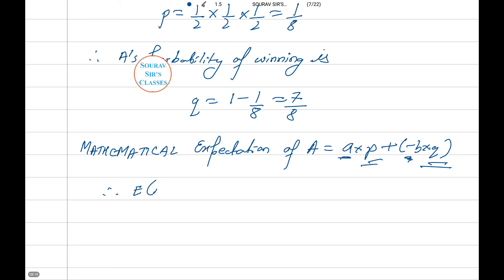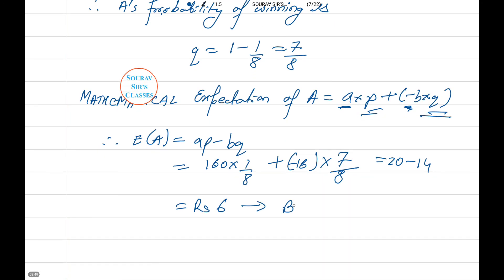Therefore expectation A equals aP minus bQ. Now putting in the values: 160 into 1 by 8 plus minus 16 into 7 by 8. This equals 20 minus 14, and upon calculation this comes to Rs. 6. That is option number B from the question. Therefore B is the correct answer.